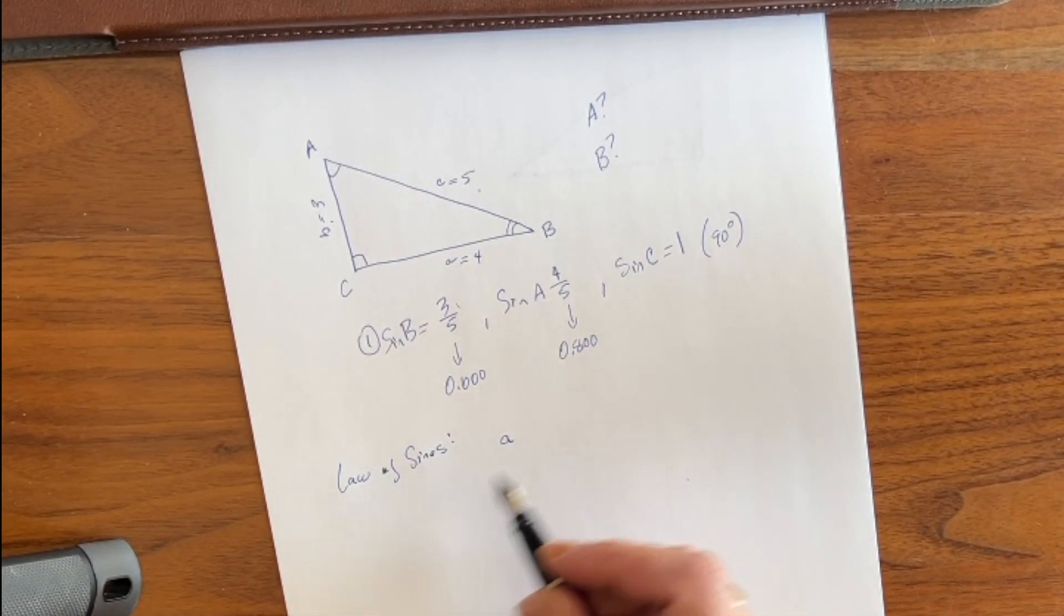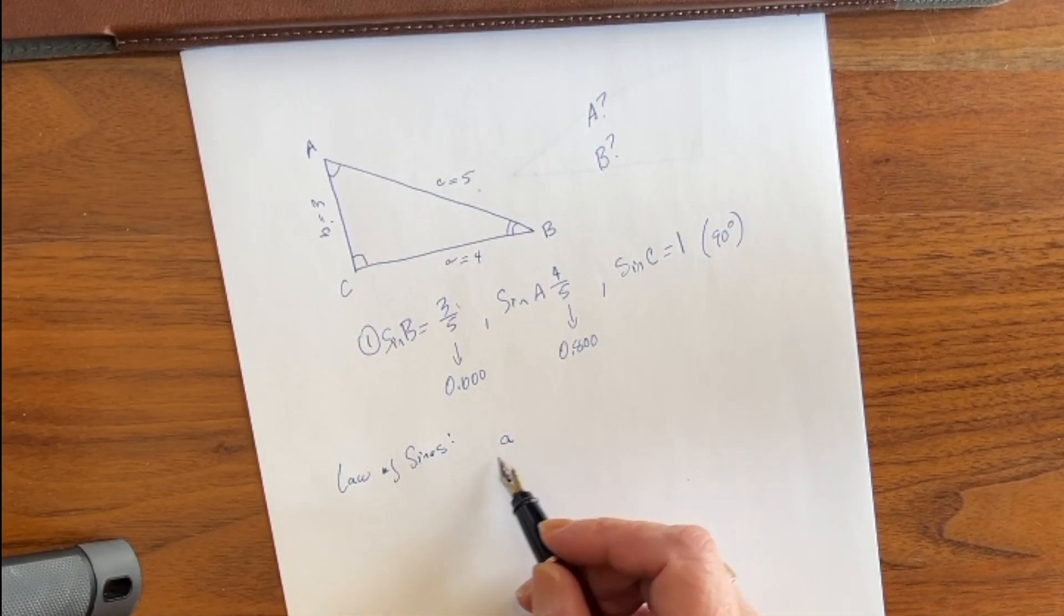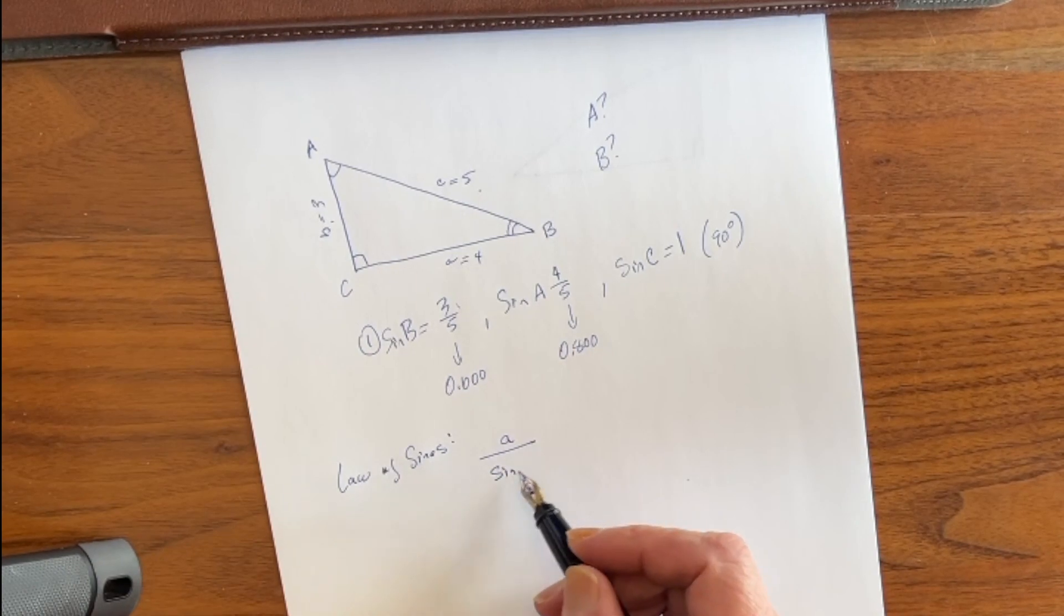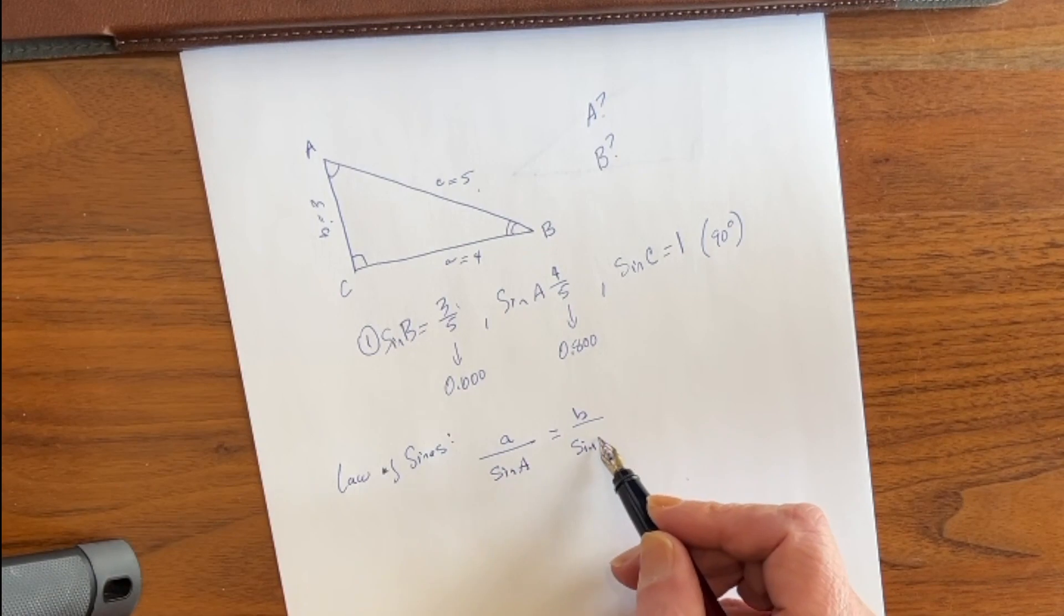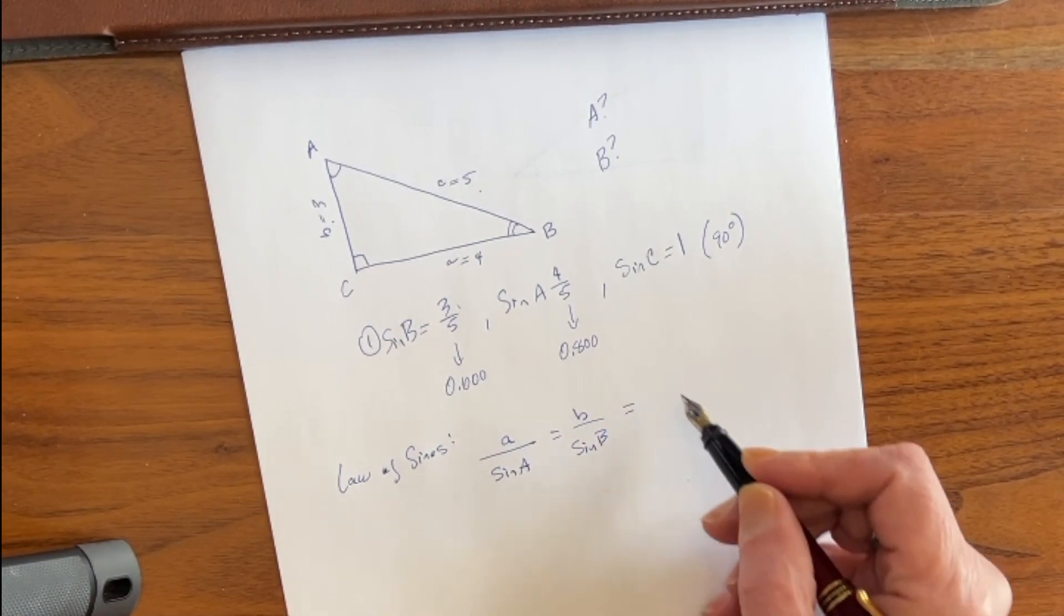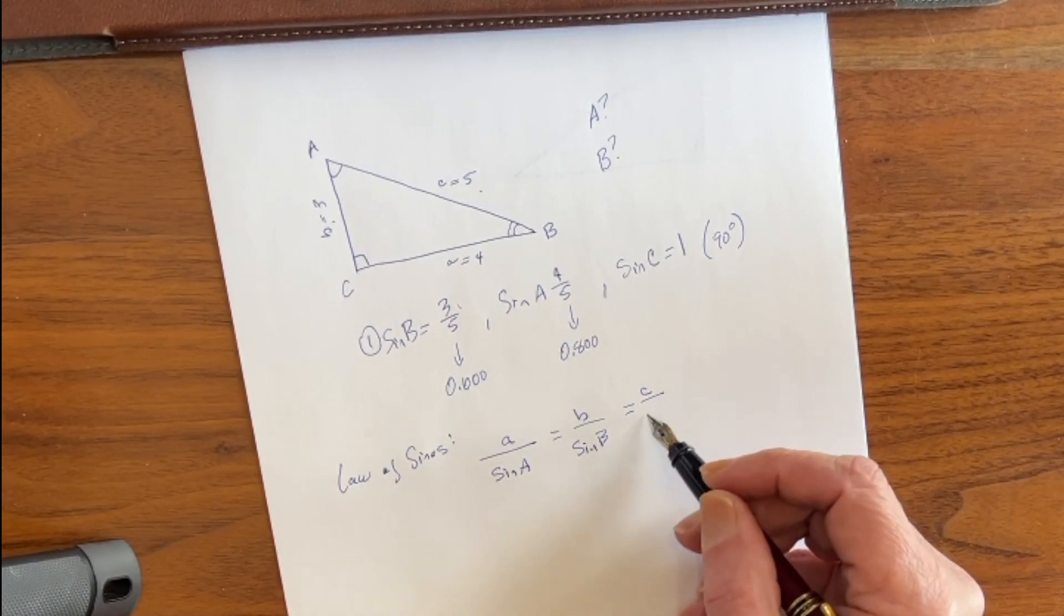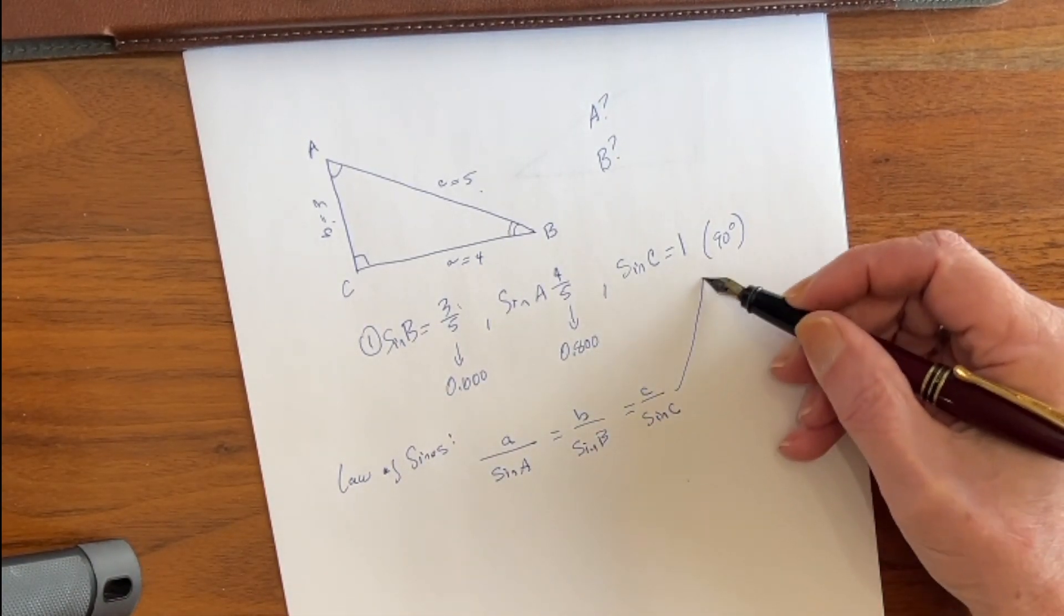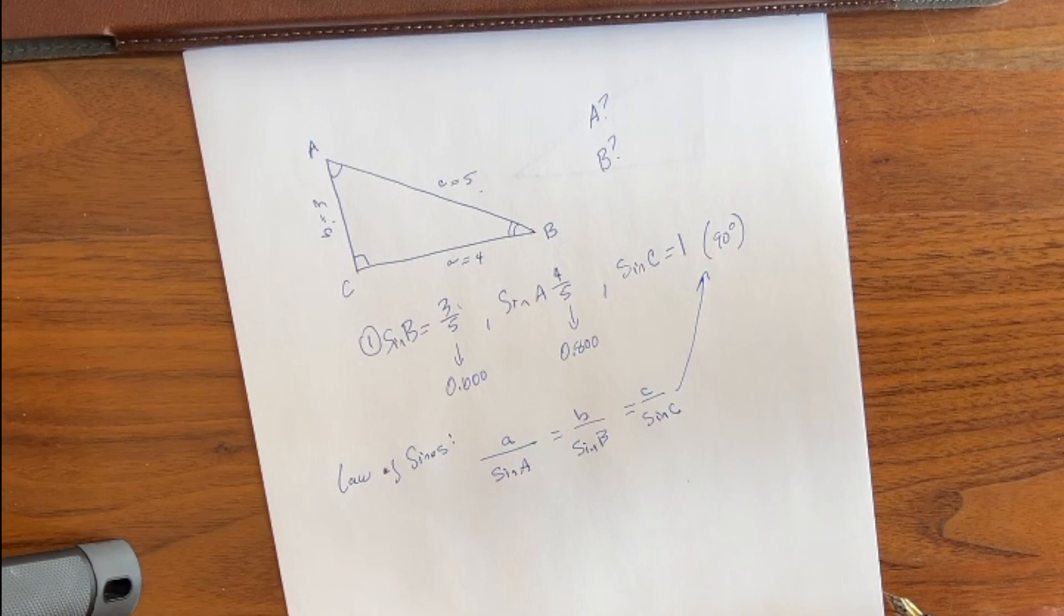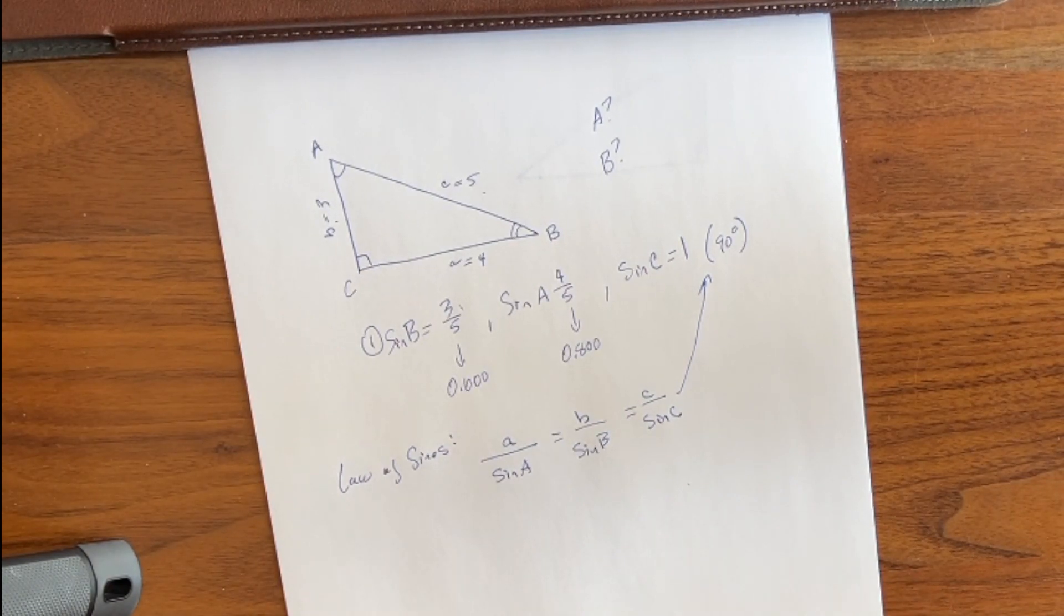Now what the Law of Sines says is that side A over sine angle A equals side B over sine angle B equals side C over the sine of angle C. Now as you recall, angle C is 90 degrees, so that's 1.